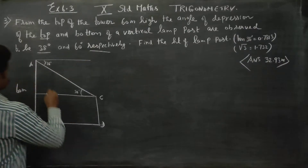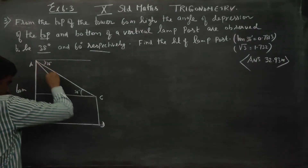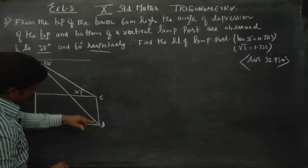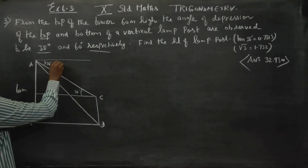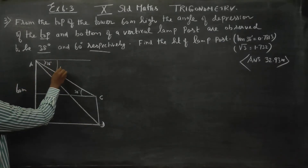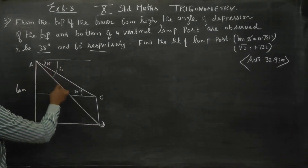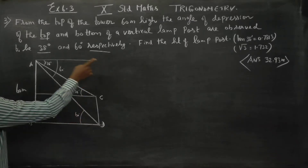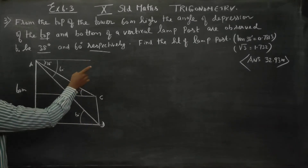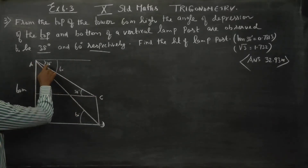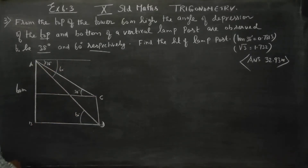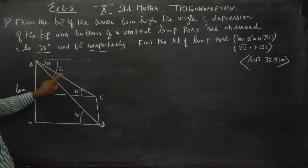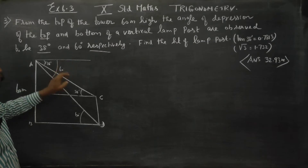The bottom angle is 60 degrees. By alternate angles, the angle at the bottom is 60 degrees and the angle at the top is 38 degrees. So the top is 38 degrees and the bottom is 60 degrees.